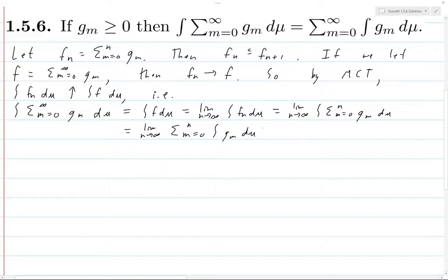Okay. And so then this is precisely the sum from m equals zero to infinity of the integral of g_m dμ. And we're done.